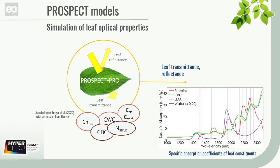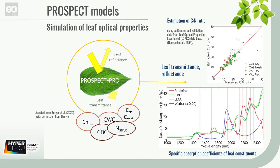This allows us to monitor leaf nitrogen content using protein-nitrogen conversion factors. PROSPECT Pro can accurately estimate leaf protein content and CBC from leaf optics in the shortwave infrared domain for both fresh and dry leaves, and can accurately estimate the carbon-to-nitrogen ratio of vegetation based on the protein-to-CBC ratio.